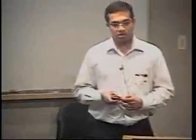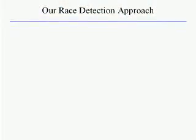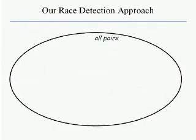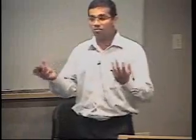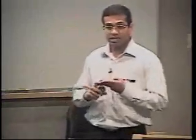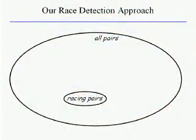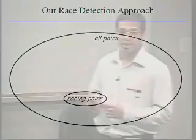Our static race detection approach begins with the set of all pairs of potentially racing accesses in a given Java program. There are three cases: pairs of statements referring to the same instance field of a class with at least one write, pairs referring to the same static field, or both indexing arrays. Because this is quadratic in program size, even a 1,000-line program might have millions of such pairs. Our goal is to come down to the small subset of pairs actually involved in races.